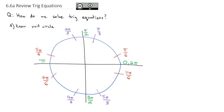We should also know the quarter angles that cut through here. All the even quarters are already labeled. The odd quarters are π/4, 3π/4, 5π/4, and 7π/4. You should know where all of those key angles are.